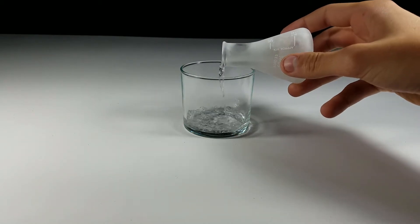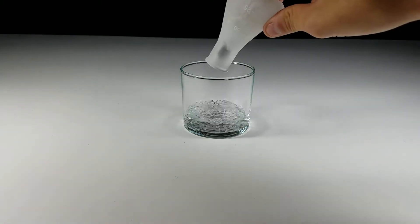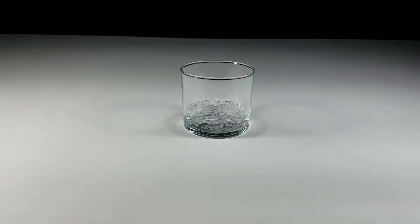Difluorothane is an organofluorine compound with the chemical formula C2H4F2. The boiling point of difluorothane is negative 25 degrees Celsius or negative 13 degrees Fahrenheit.